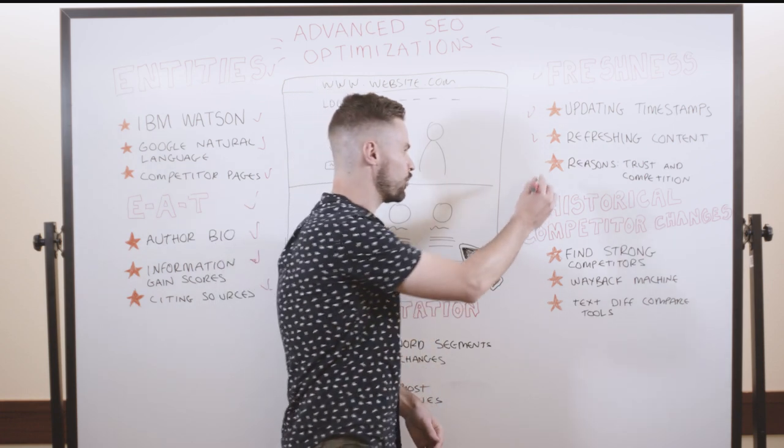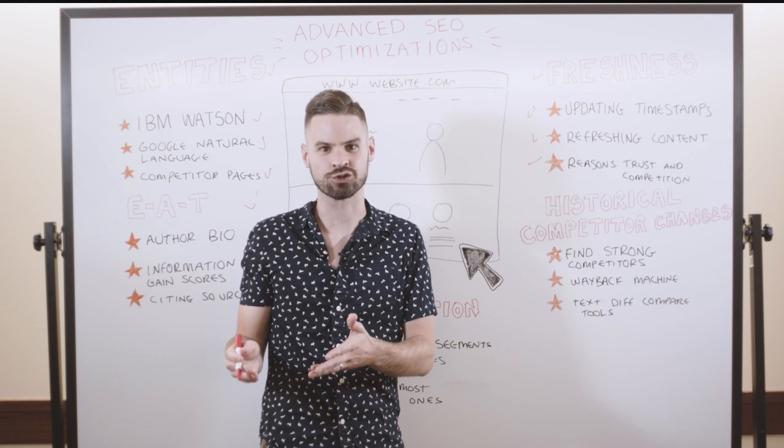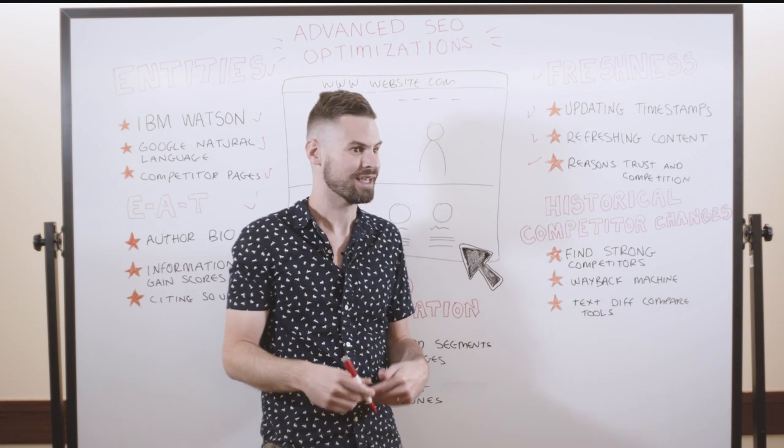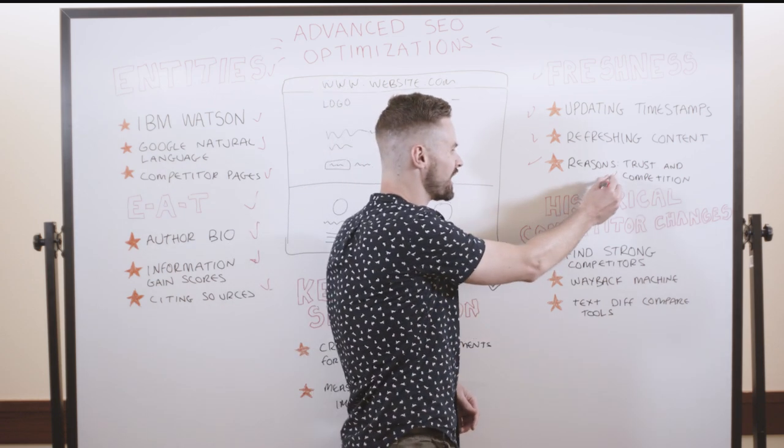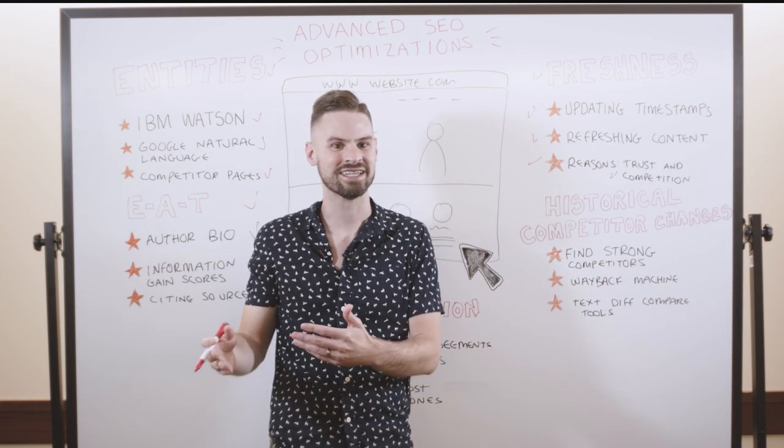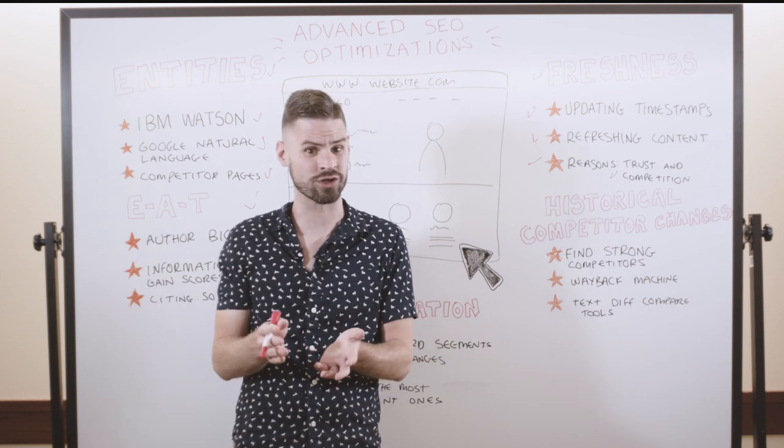From a trustworthiness standpoint, if Google thinks the content is outdated, it's hard for it to trust that the information is actually accurate within the article. As well, from a competitive standpoint, it's very hard for Google to compete in terms of real-time results. That's why users might go to platforms like Twitter instead of Google.